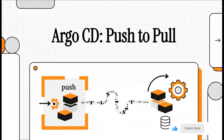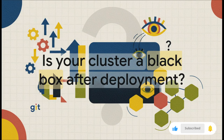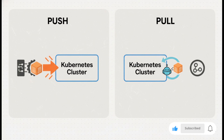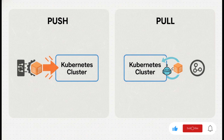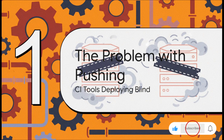Let's talk about ArgoCD and a really fundamental shift in how we think about deploying to Kubernetes — the move from a push model to a pull model. Understanding this difference is a total game changer for building modern, reliable infrastructure. Think about your last deployment: the pipeline goes green, everything looks good, but then what do you really know about what's happening inside your Kubernetes cluster? For a lot of teams, the second you hit deploy, that cluster just becomes a black box. This all boils down to the approach — push versus pull.